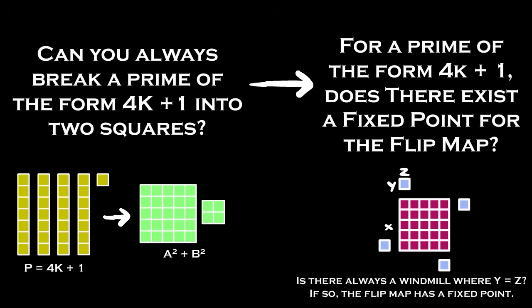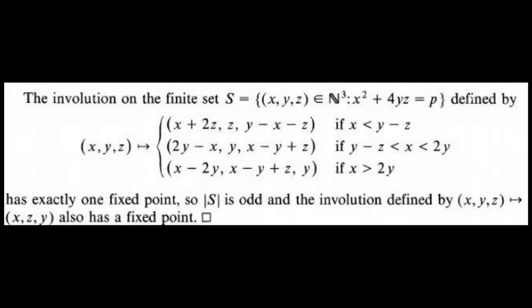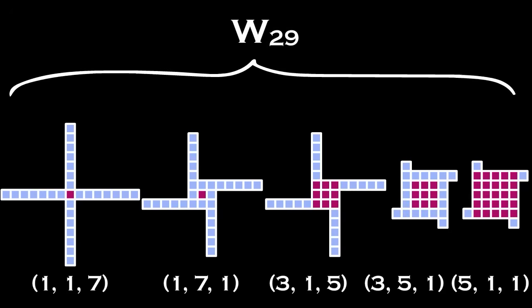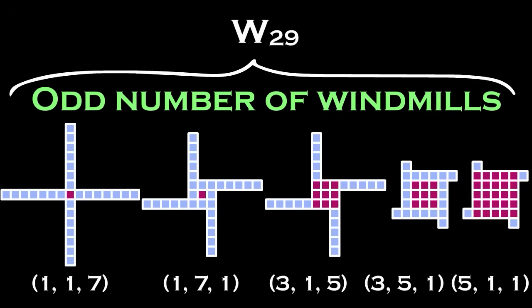But as it turns out, it's a bit difficult to determine, so there is a workaround. What Zagier does in his one sentence proof is make another involution and showcases that this new involution has exactly one fixed point. Therefore, the number of elements in the domain, in other words the set of windmills, is odd.